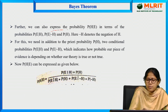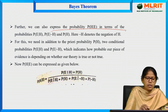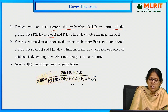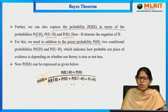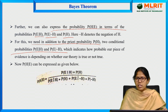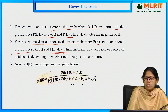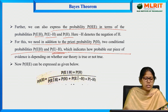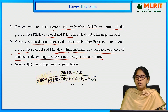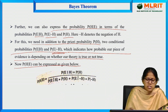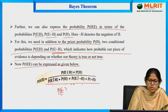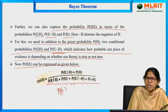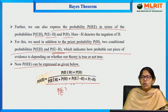Further, we can also express the probability of H given E in terms of probability of E given negation H and probability of H. We need, in addition to the prior probability of H, two conditional probabilities: probability of E given H and probability of E given negation H, which indicates how probable our piece of evidence is depending on whether our theory is true or not true.